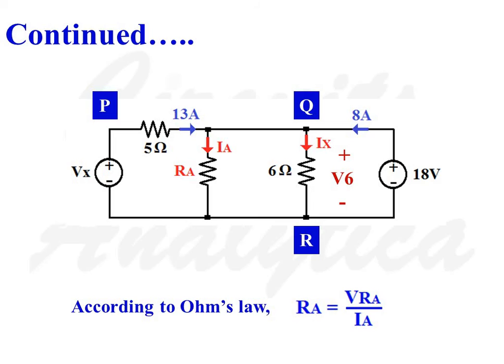According to Ohm's law, V is equal to I into R, or R is equal to V divided by I. So we can write RA is equal to VRA divided by IA, where RA is the unknown resistance connected across the 18 volt source.